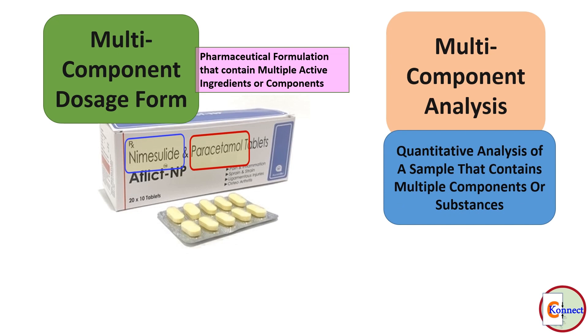The goal is to determine the quantity of API in a multi-component dosage form. This can be challenging because the signals or absorbance from different components may overlap with each other, making it difficult to quantify them accurately.